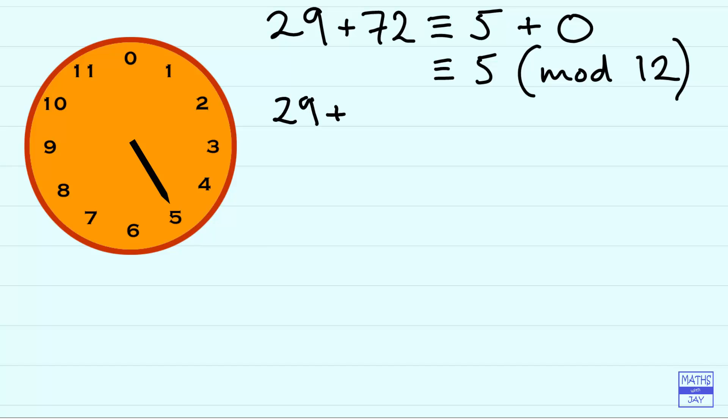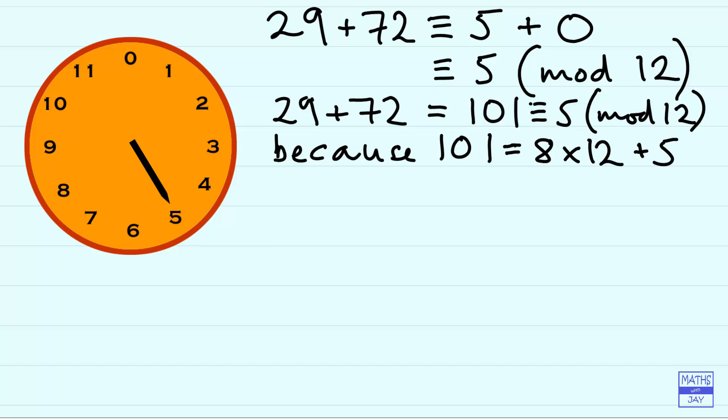Alternatively you could add together 29 and 72 first and then work out what they would be congruent to. So rather than whizzing round and round and round this clock, a faster way to do this would be to think, well, we can always divide the number by 12 and just keep the remainder. So here with a 29, 29 divided by 12 is 2 remainder 5. 72 divided by 12, well that goes in exactly so there's no remainder. So the remainders are 5 and 0.